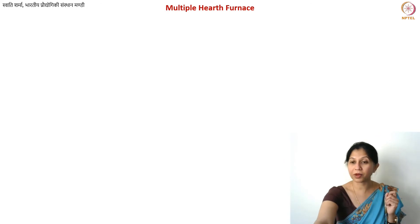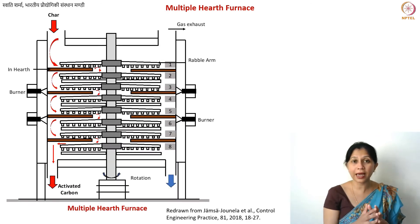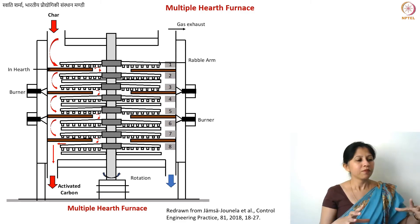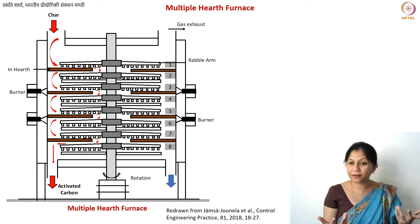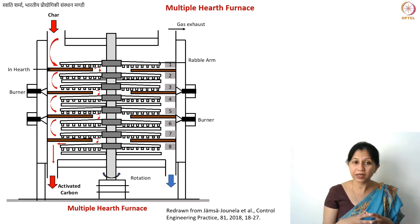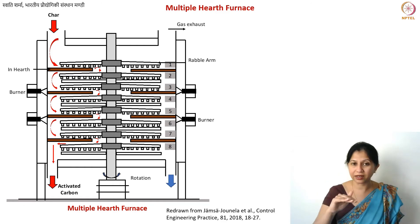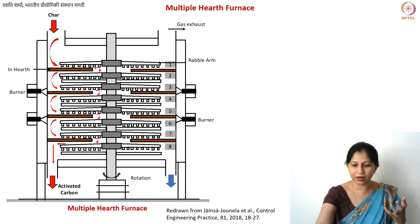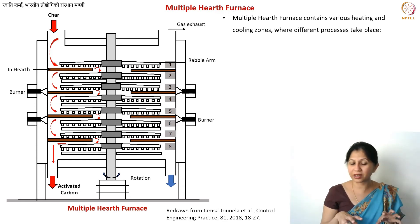The next type of furnace used in activated carbon manufacturing is known as the multiple hearth furnace. A hearth is a furnace made of bricks — more like a fireplace kind of furnace using refractory material. Here I've shown eight stages, though you can have more or less. The idea is that multiple hearth furnaces are connected in a vertical system with various heating zones and cooling zones, and steam or gas injection is also possible at multiple stages.